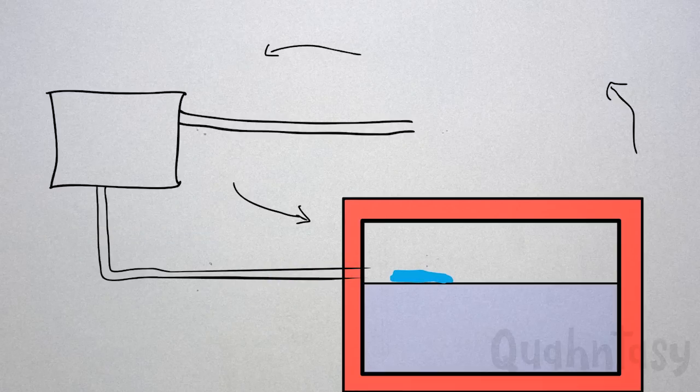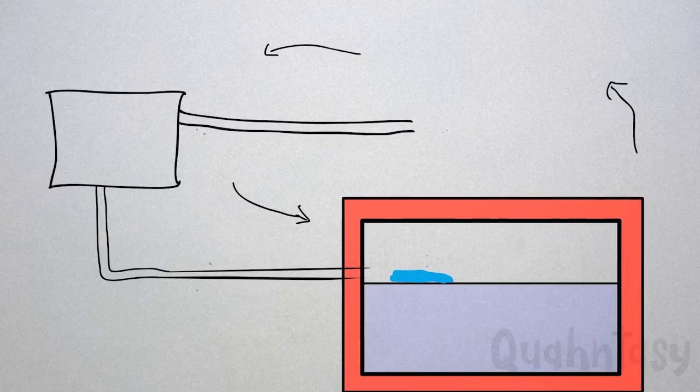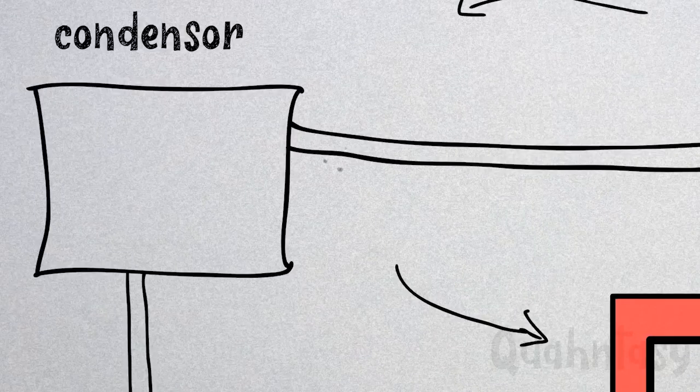And then comes back up to absorb heat and the cycle repeats. The fancy name for this stuff is the refrigerant or the coolant, because it's cool, get it? This part which condenses stuff is called a condenser, what a surprise right, and this is obviously called an evaporator.